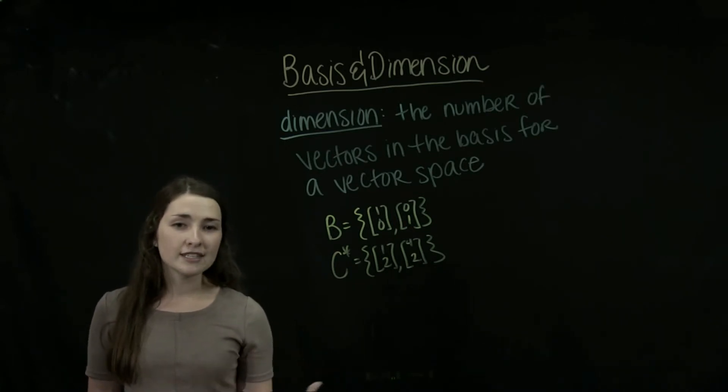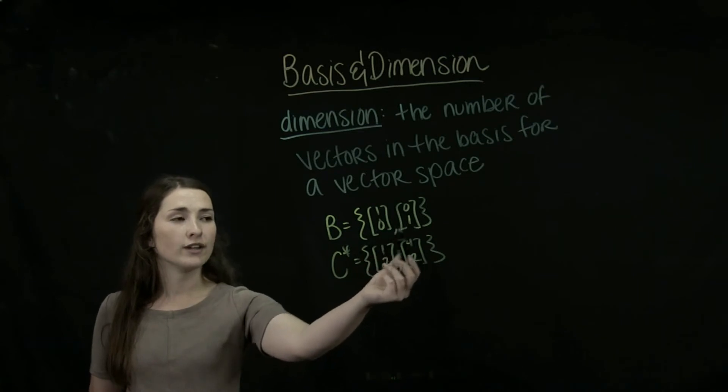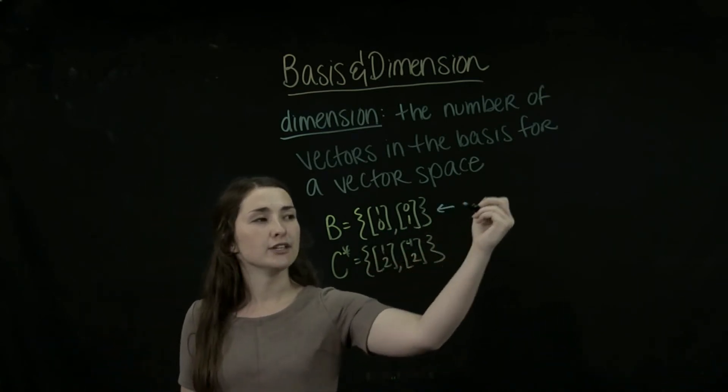So if we look at the dimension of B, we see that it is dimension 2 because it has two vectors in its basis. We have one, two vectors, so this dimension is 2.